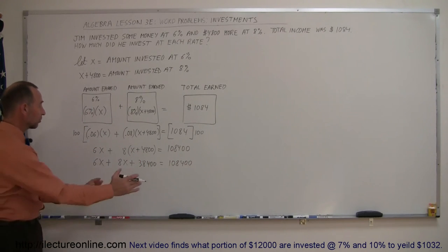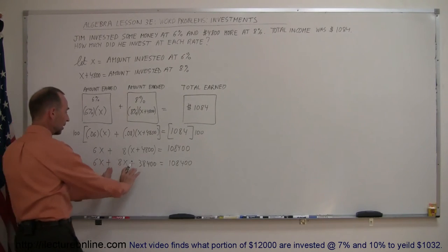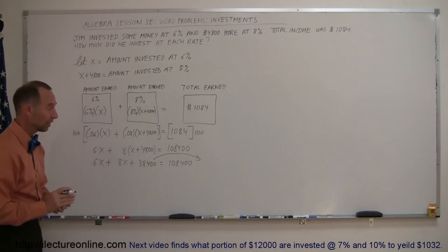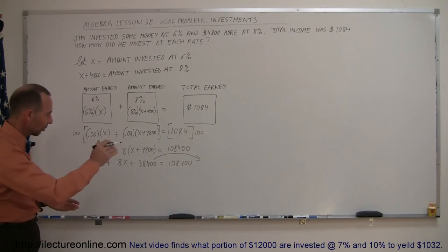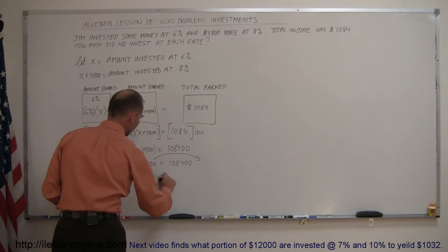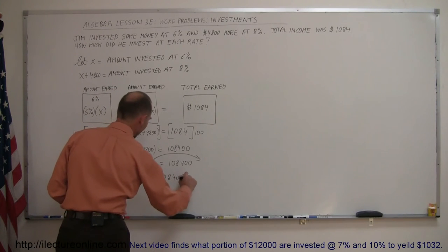Equals 108,400. Alright, next step. All the x's should be on the left side, they already are. Now move all the numbers to the right side, which means this goes to the right side. I have to change the sign because I cross the equal sign. So we have 6x plus 8x is equal to 108,400 minus 38,400.